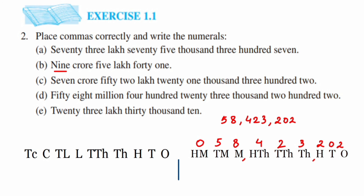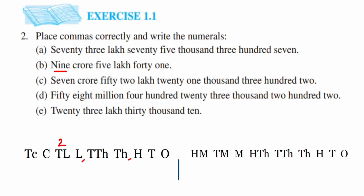Last problem, Problem E: twenty-three lakh thirty thousand ten. It's the Indian system again. Twenty-three lakh gives us 23. Thirty thousand gives us 30. We don't have a hundreds value, so we put zero there, then 10 for tens and ones. The answer is 23,30,010. We've solved all problems. I hope it's clear. If you have any questions or doubts, drop a comment below. Thank you so much for watching.